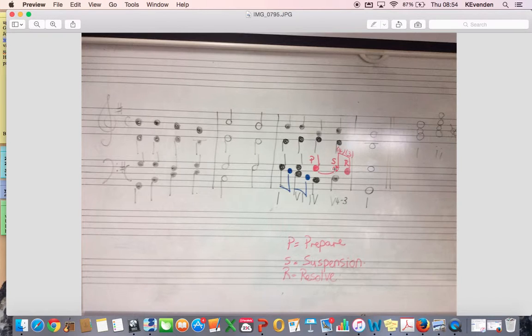As is the case with a 7-6 or a 2-3, you have to prepare the chord. So you make sure that the note before it, or the chord before it, includes, in this example, a G.